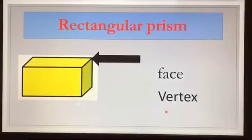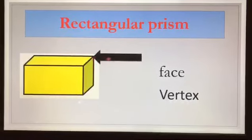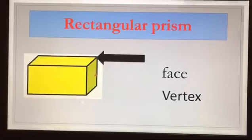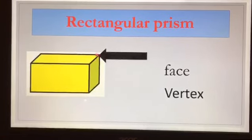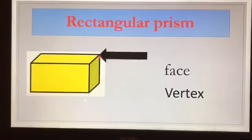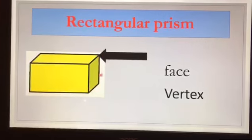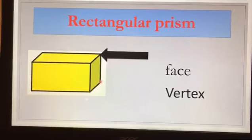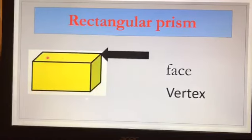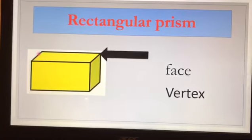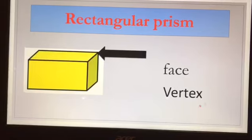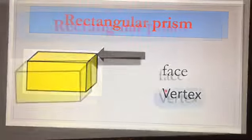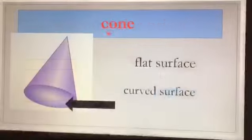Let's see the rectangular prism. Here we have the face and the vertex. The arrow is pointing — is it pointing towards the face or the vertex? Yes, this is the vertex. As I told you, vertex and corners are the same. So the arrow is showing us the vertex, and we have to circle the vertex.